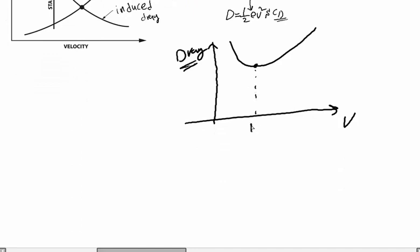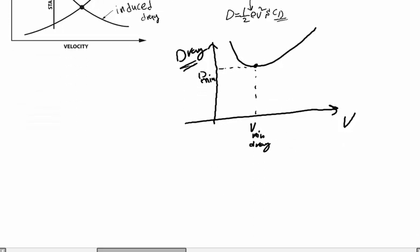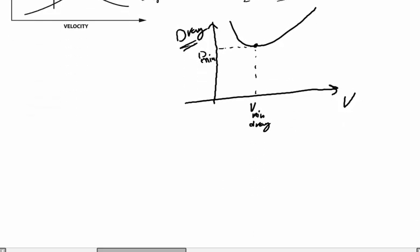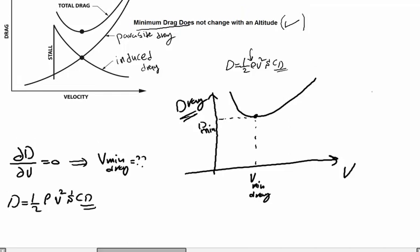At that minimum point, this is the minimum drag D_min. We want to determine whether this minimum drag changes with altitude. We differentiate drag with respect to v and equate to zero. From flight performance, we know that CD equals a constant 'a' plus b·CL², where 'a' is the parasite drag coefficient CD0 and b·CL² is the induced drag coefficient term.